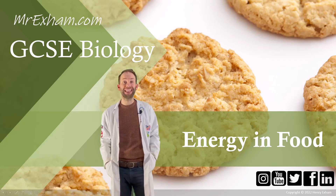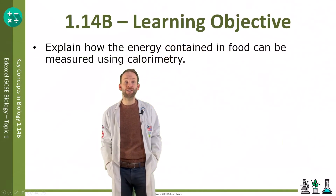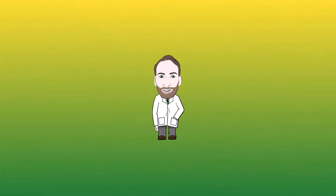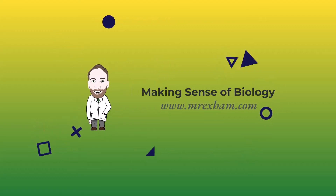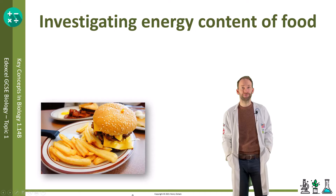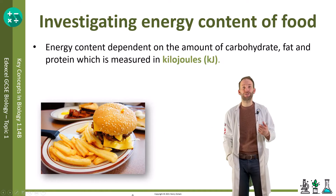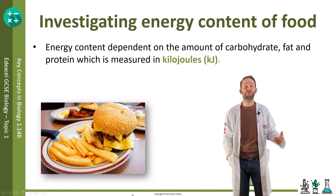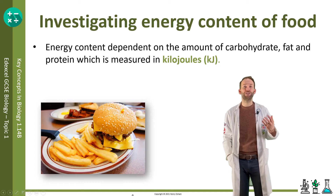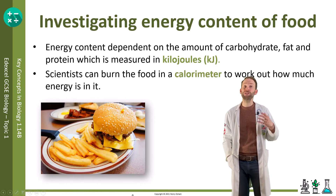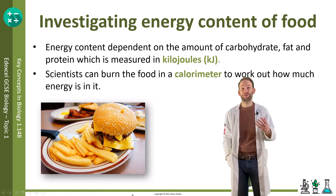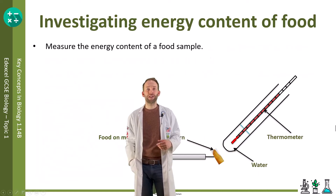Objective 1.14b: explain how the energy contained in food can be measured using calorimetry. Food has a total energy content dependent on the amount of carbohydrate, fat, and protein in it. We measure this energy content in kilojoules. Scientists can burn the food in something called a calorimeter to work out how much energy is in the food.